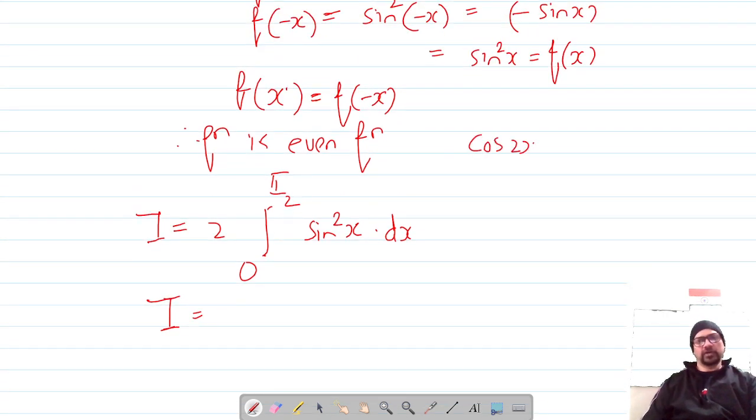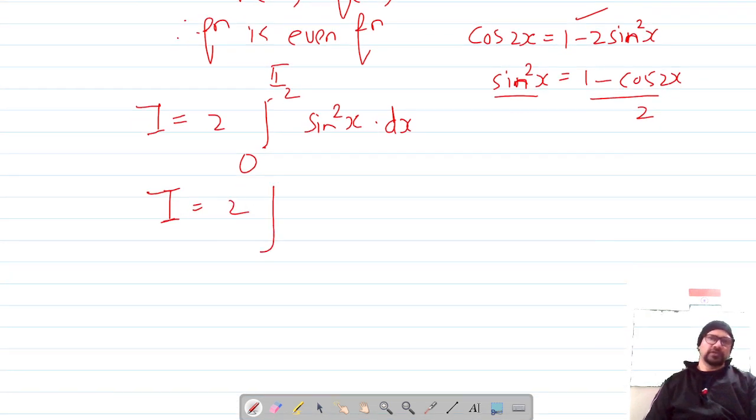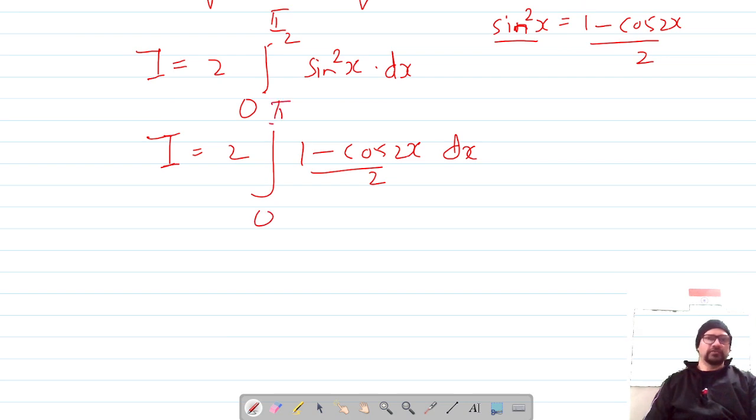We know that cos 2x = 1 - 2sin²x. From here, 2sin²x = 1 - cos 2x, which gives us sin²x = (1 - cos 2x)/2. So this becomes 2∫_0^{π/2} (1 - cos 2x)/2 dx with limits 0 to π/2.